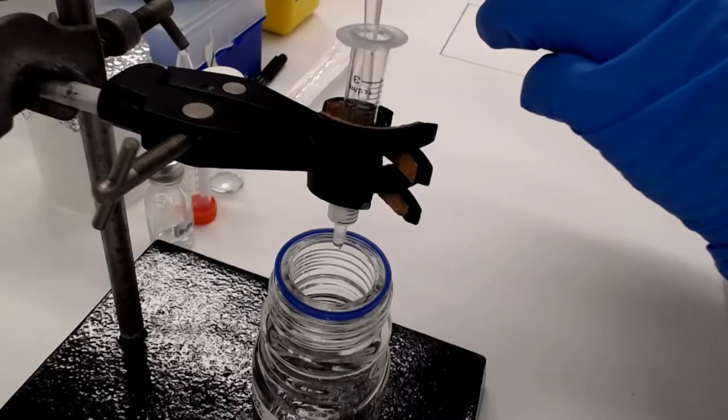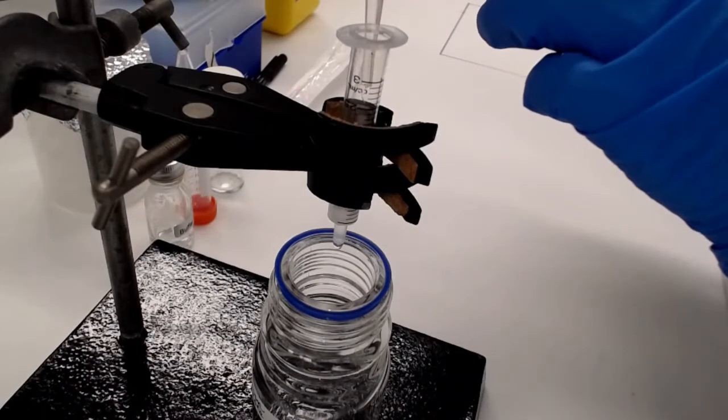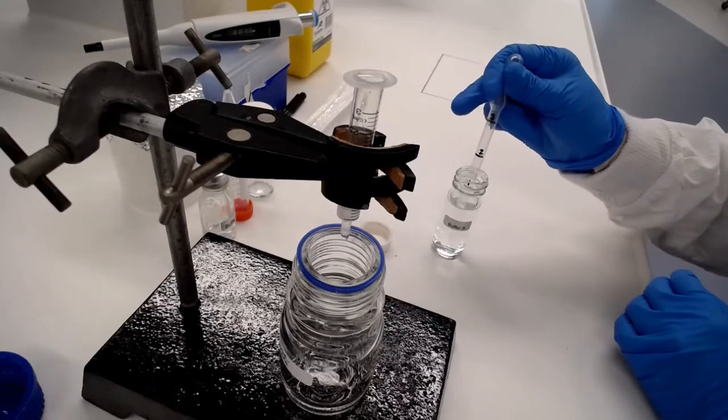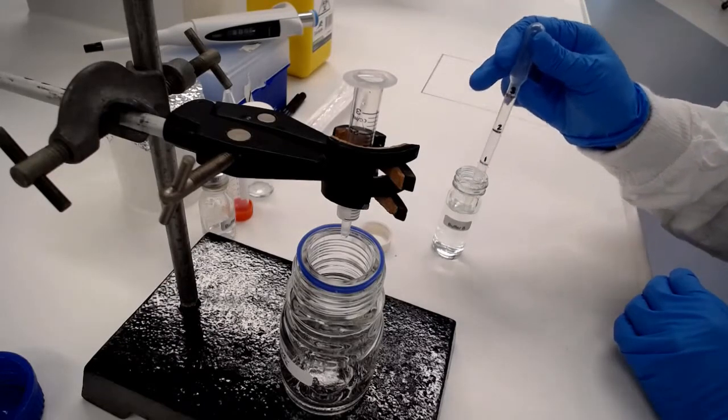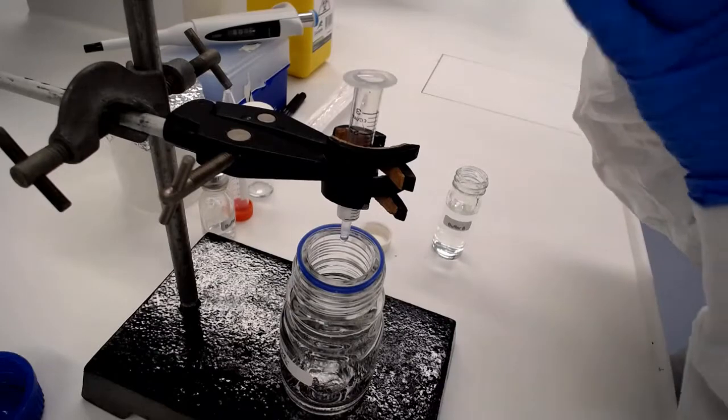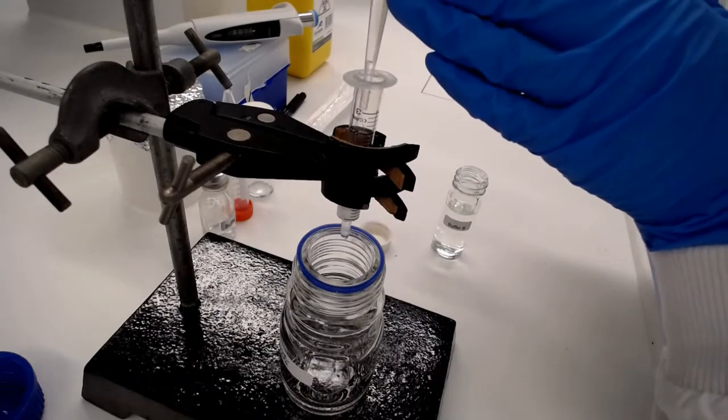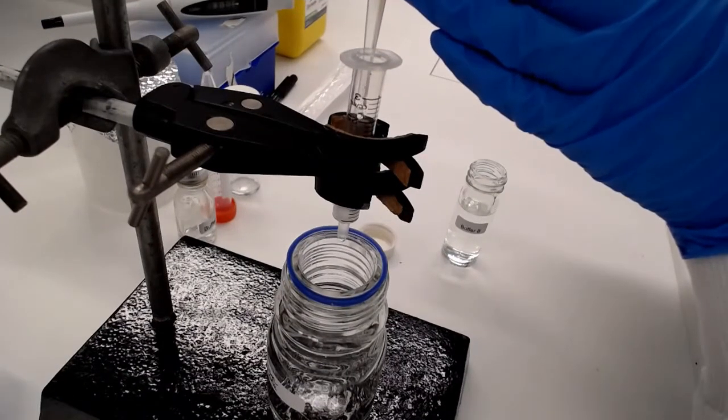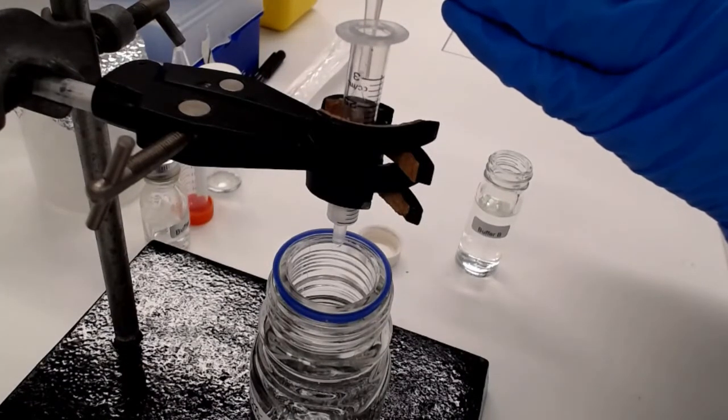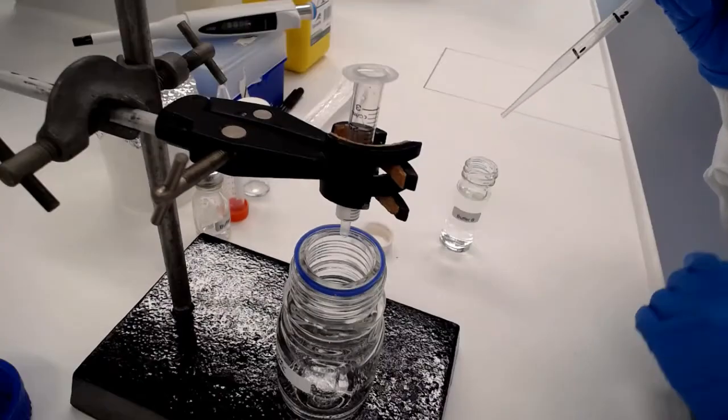We've got three mils of buffer B there. We're going to now slowly add that to our column and the key here is slowly and gently, carefully. What you don't want to do is squirt the buffer in really hard because that'll disrupt the bed of nickel agarose and the procedure won't work.